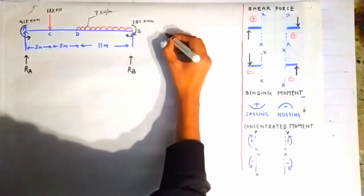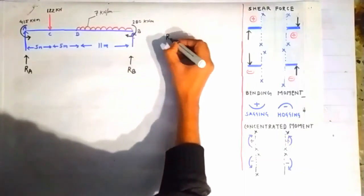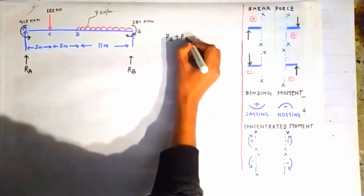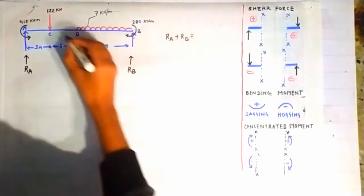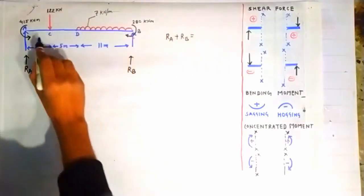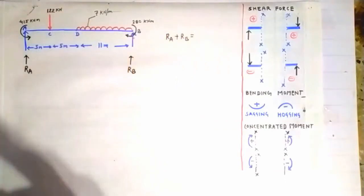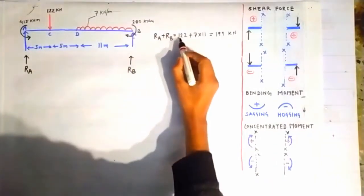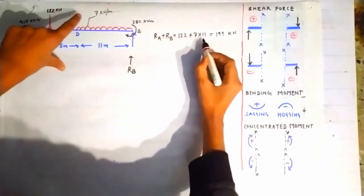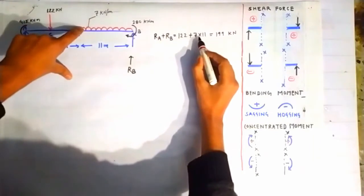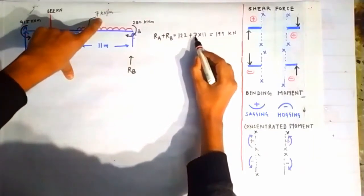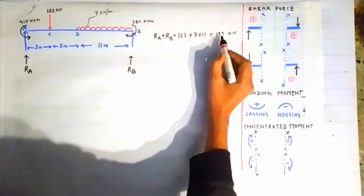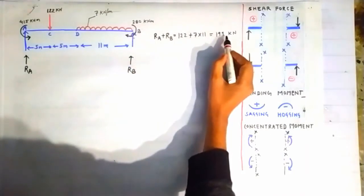The first equation is to equate RA plus RB equal to the net vertical load. The net vertical load is 122 kN because of the point load, plus the UDL contribution of 7 × 11 = 77, giving us 199 kN total.